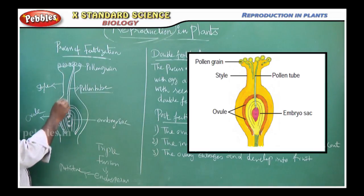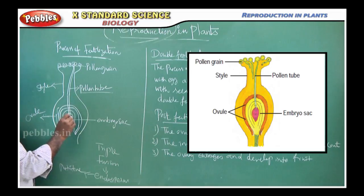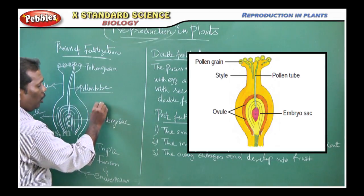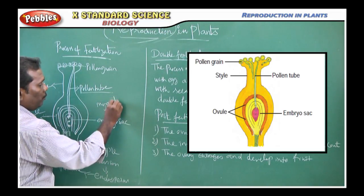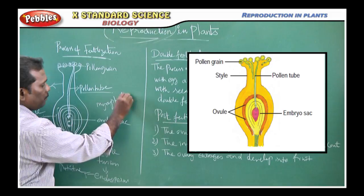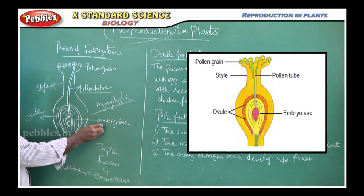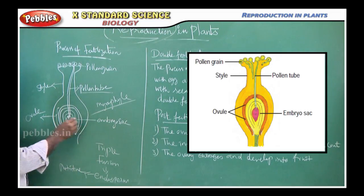First the pollen tube extends to the opening region of the ovule. The opening region of the ovule is called the micropyle. The micropyle is considered as the opening region of the ovule. The ovule has the embryo sac, which has 8-cell stages.